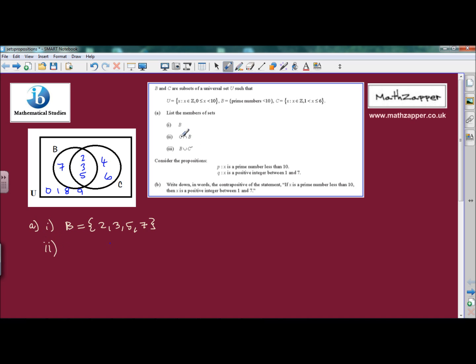Part 2, we're asked to find C intersection B. And again, because we've got the Venn diagram it shouldn't be too difficult. C and B, the intersection is this part, so therefore C intersection B is 2, 3 and 5. And again, very easy to do when you've got a Venn diagram.